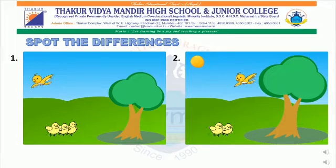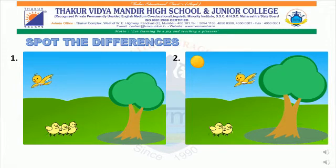The tree in the first picture is small. Whereas, in the second picture, the tree is big. Now, let us count the chickens. In the first picture, we can see three chickens. But in the second picture, we can see only two chickens.